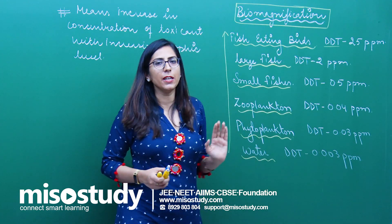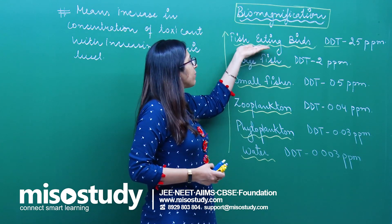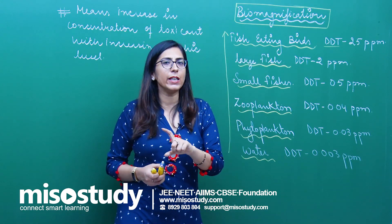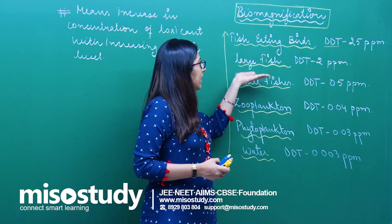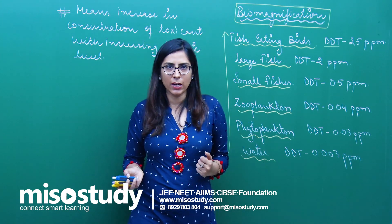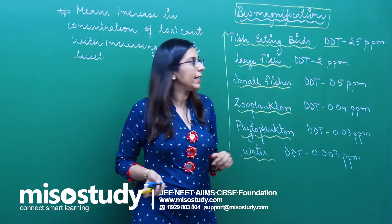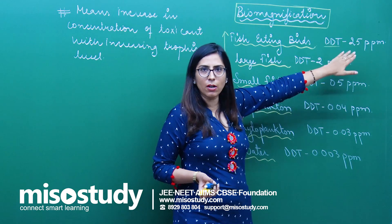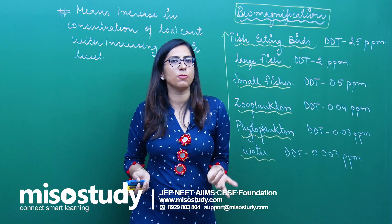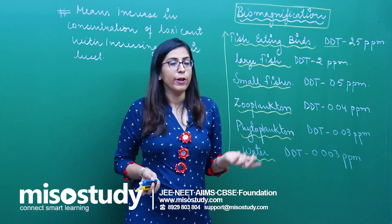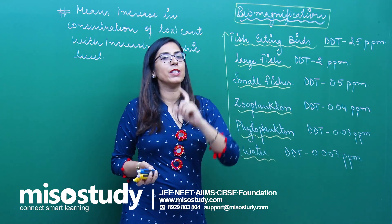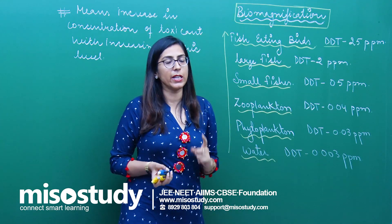The toxicant keeps increasing because fish-eating birds are not feeding on a single large fish — they are feeding on multiple fishes in a pond. In that case the concentration of toxicant present in their body becomes much much higher. That is the reason DDT is banned in our country.